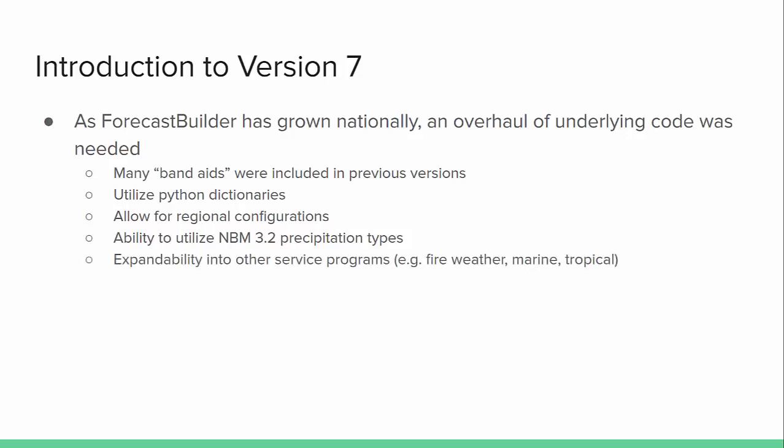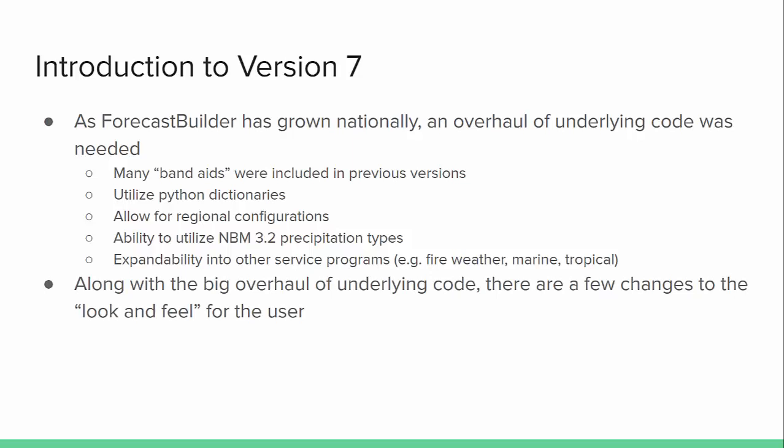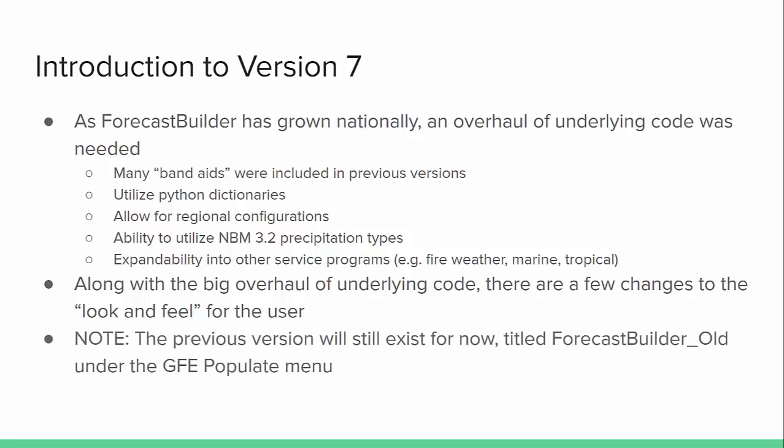We also need to expand, or at least provide the capability to expand into other service programs like fire weather, marine, and tropical. Version 6 had some stuff in there for fire weather, but it was very crude. This is now the first real attempt to expand into that program, and it will also make moving into programs such as marine and tropical a little easier. Along with the big overhaul of the underlying code, there were a few changes needed to the look and feel for the user, which we'll go through.